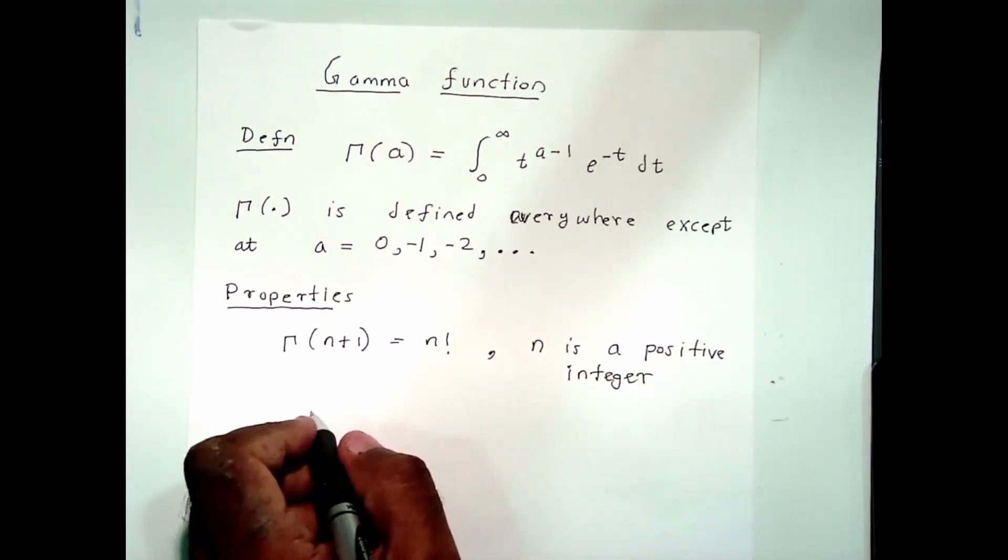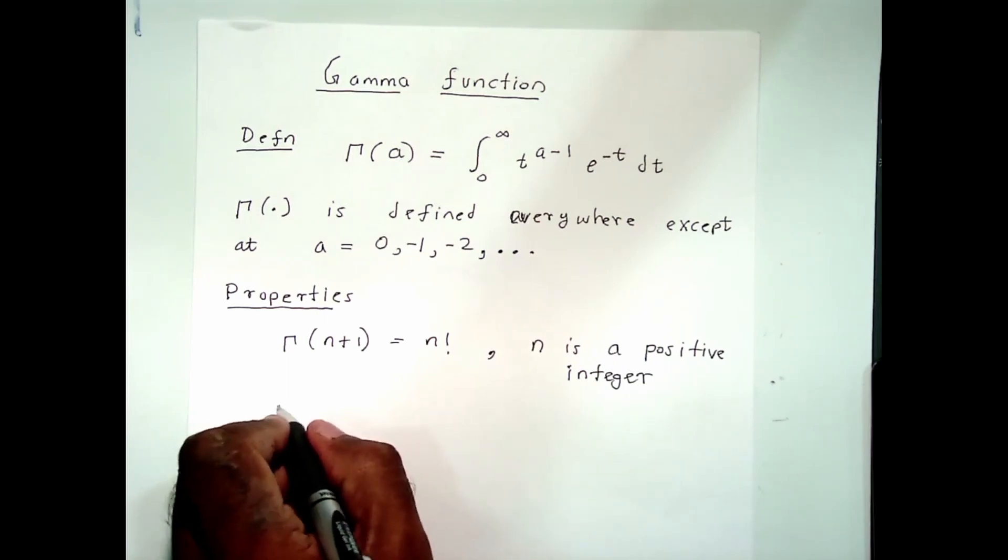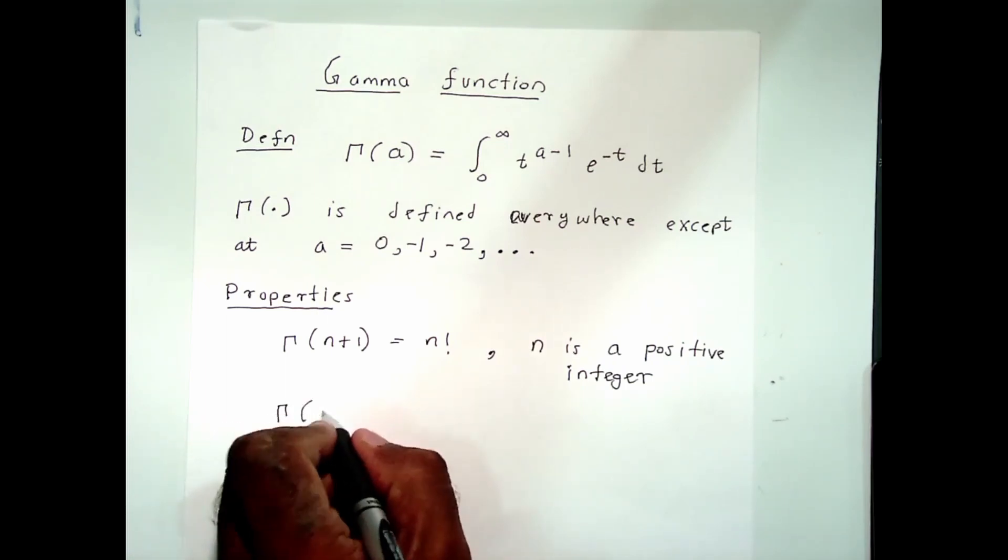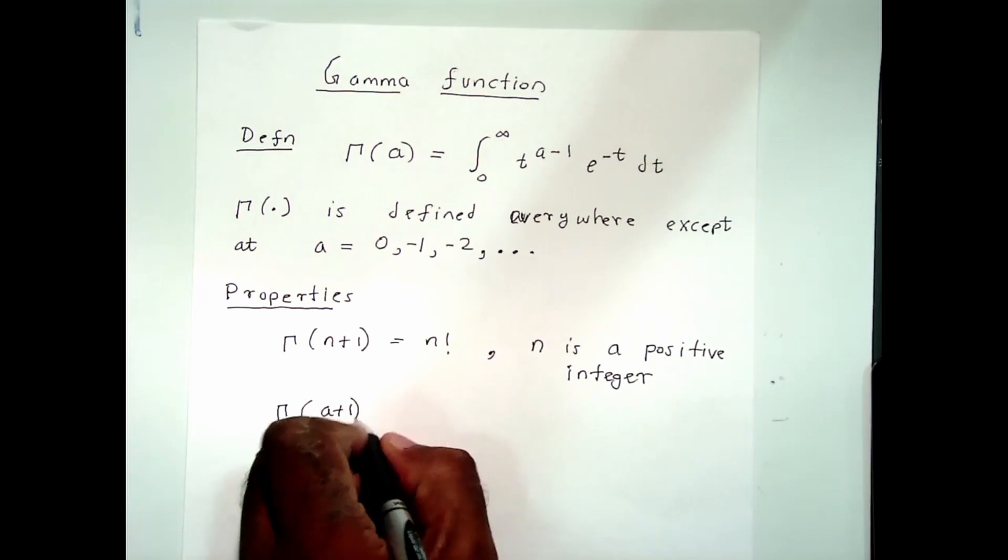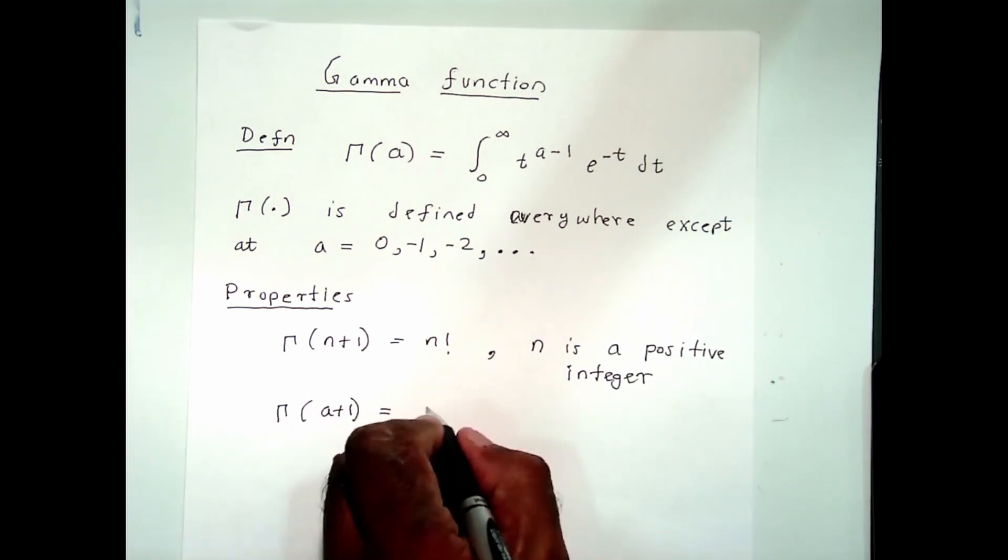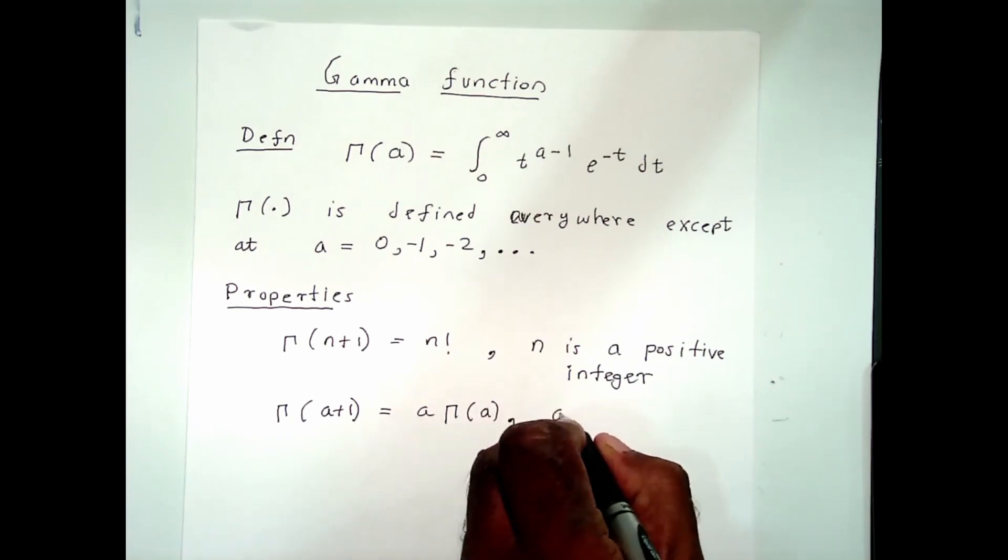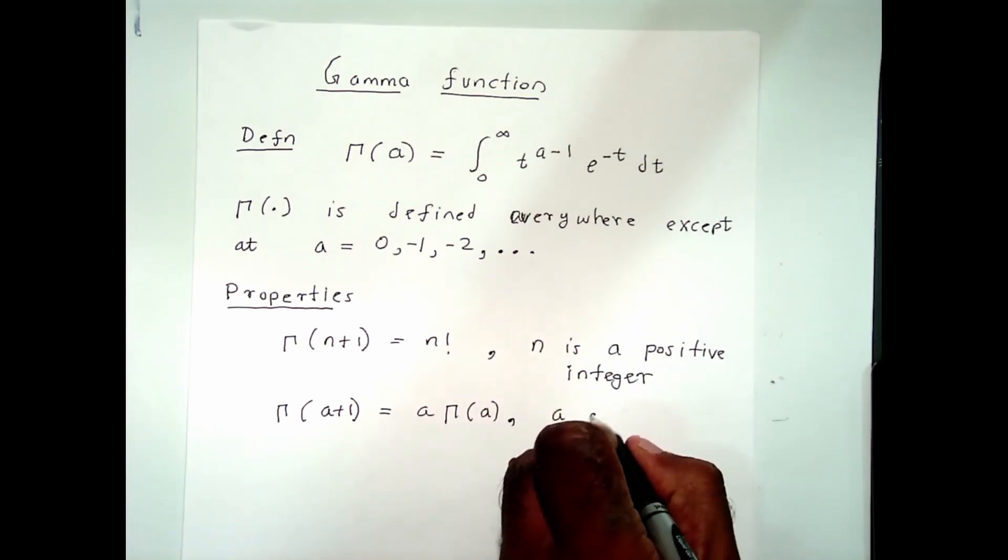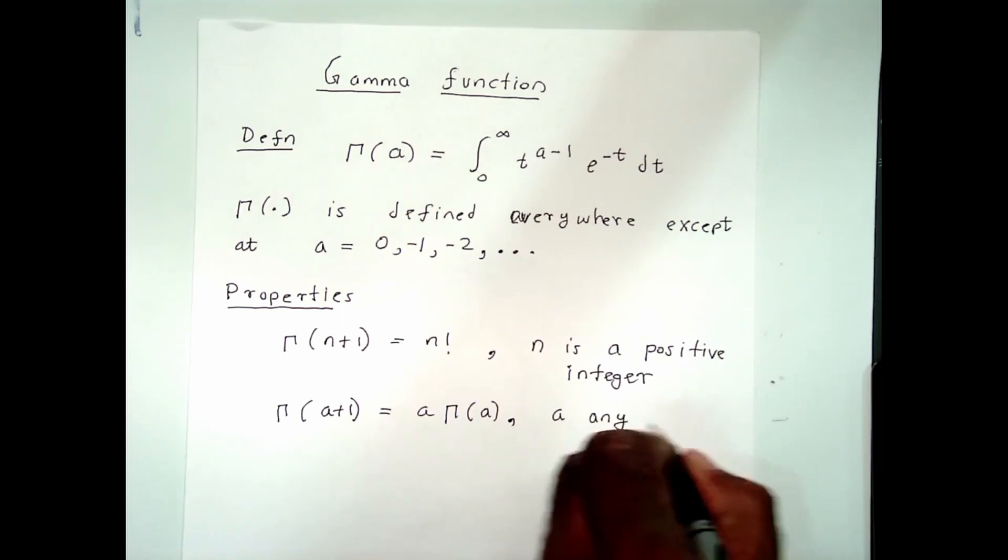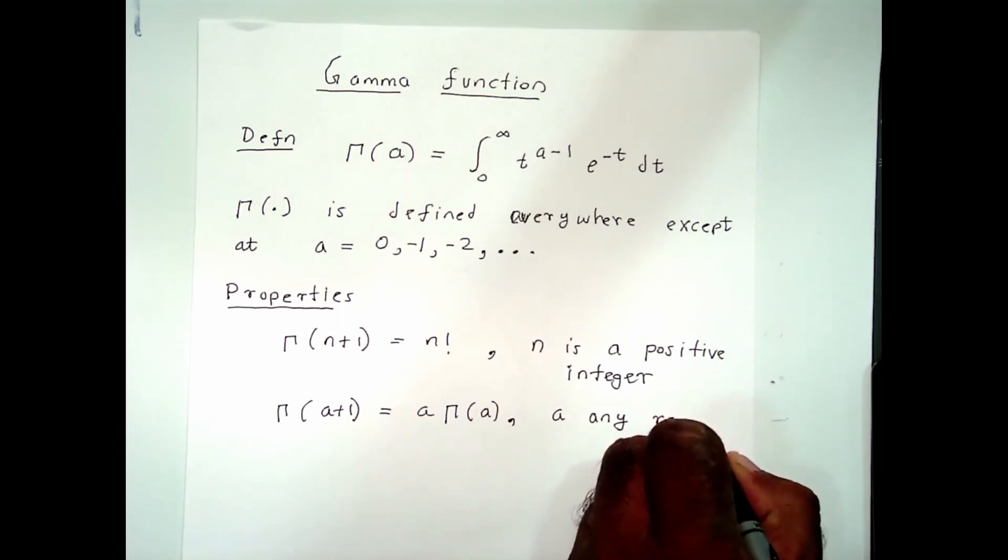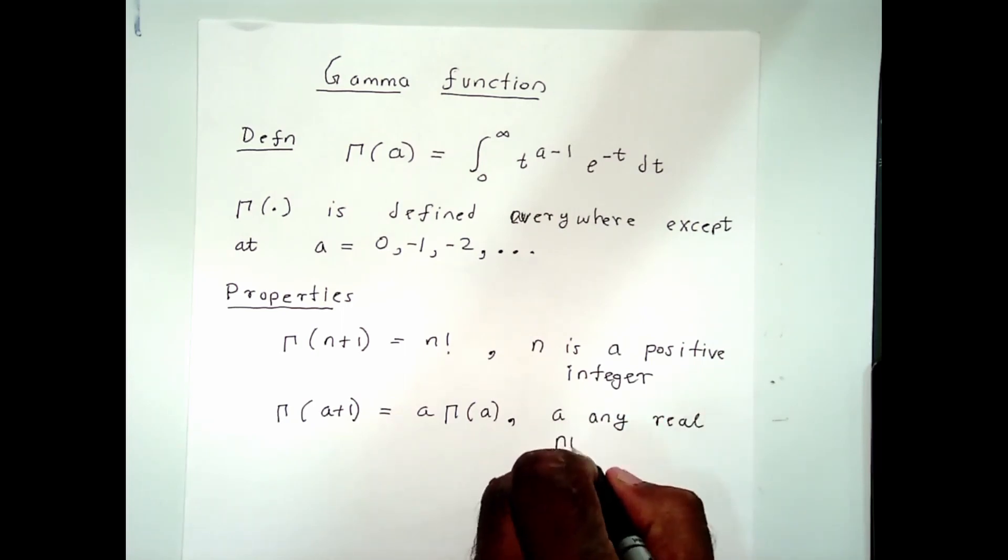Another property is that gamma at a plus 1 is equal to a times gamma at a. Here a can be any real number.